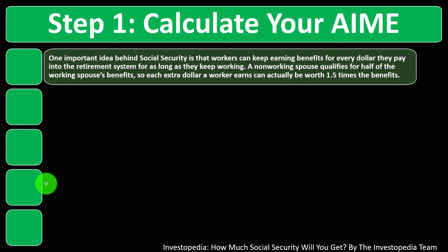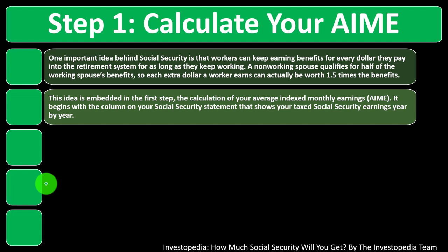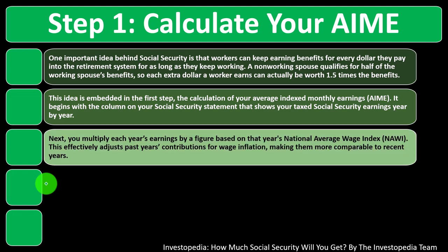One important idea behind social security is that workers can keep earning benefits for every dollar they pay into the retirement system for as long as they keep working. A non-working spouse qualifies for half of the working spouse's benefits, so each extra dollar a worker earns can actually be worth 1.5 times the benefit. This idea is embedded in the first step — the calculation of your average indexed monthly earnings, the AIME. It begins with a column on your Social Security statement that shows your taxed social security earnings year by year.